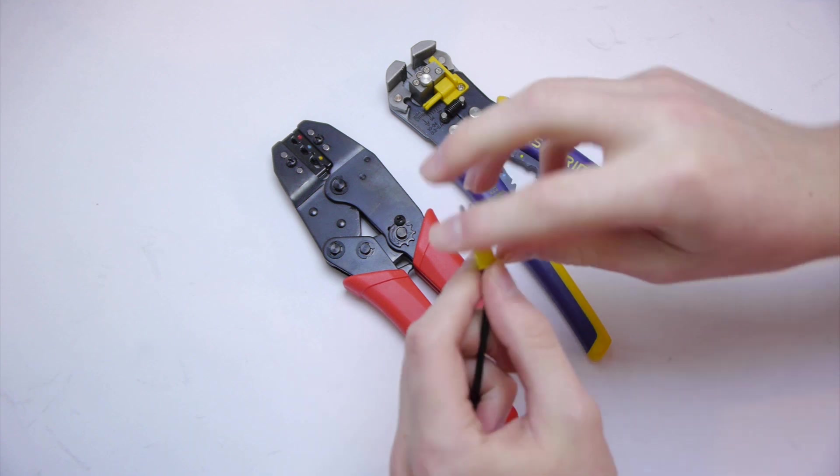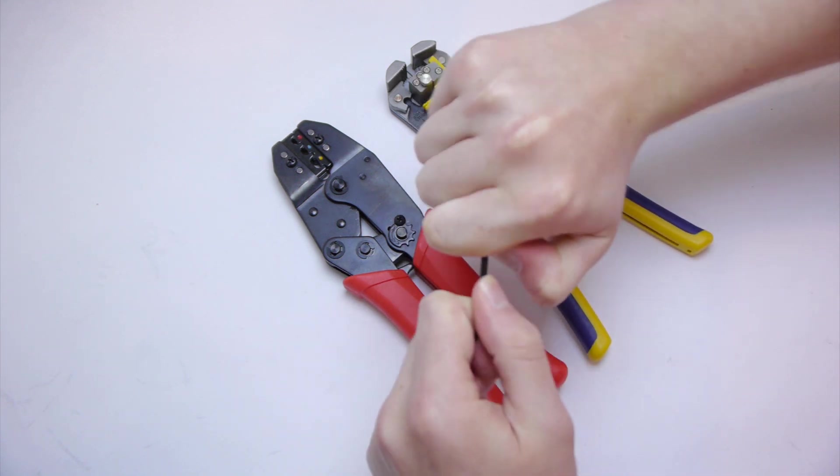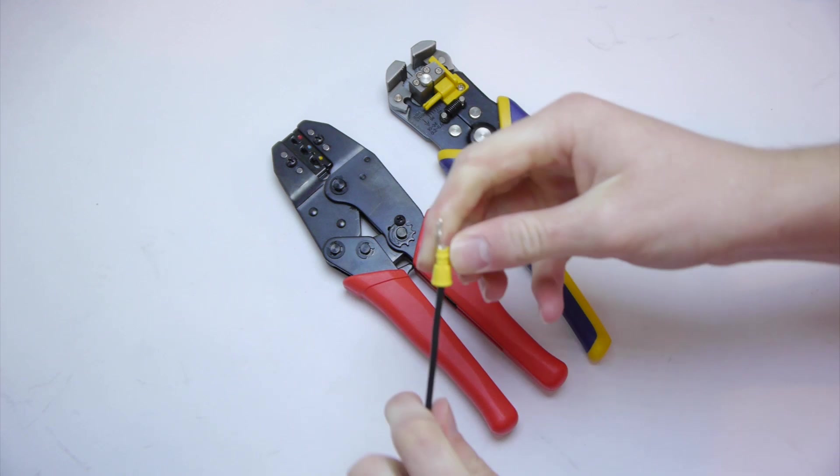The way you can test it is by pulling on it as hard as you can. If you can pull it out with your bare hands, it's not a good enough connection.